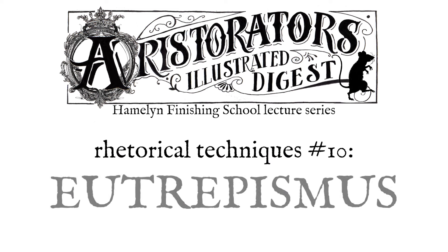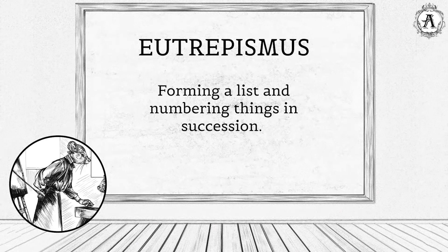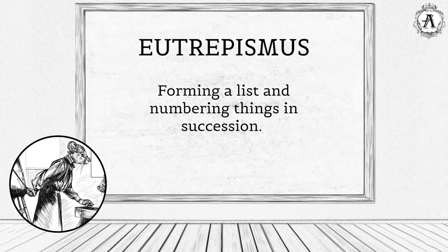What is eutrepismus as a rhetorical device? Eutrepismus is the forming of a list and numbering things in succession. You may go back around the list, or you may just go through the list once.